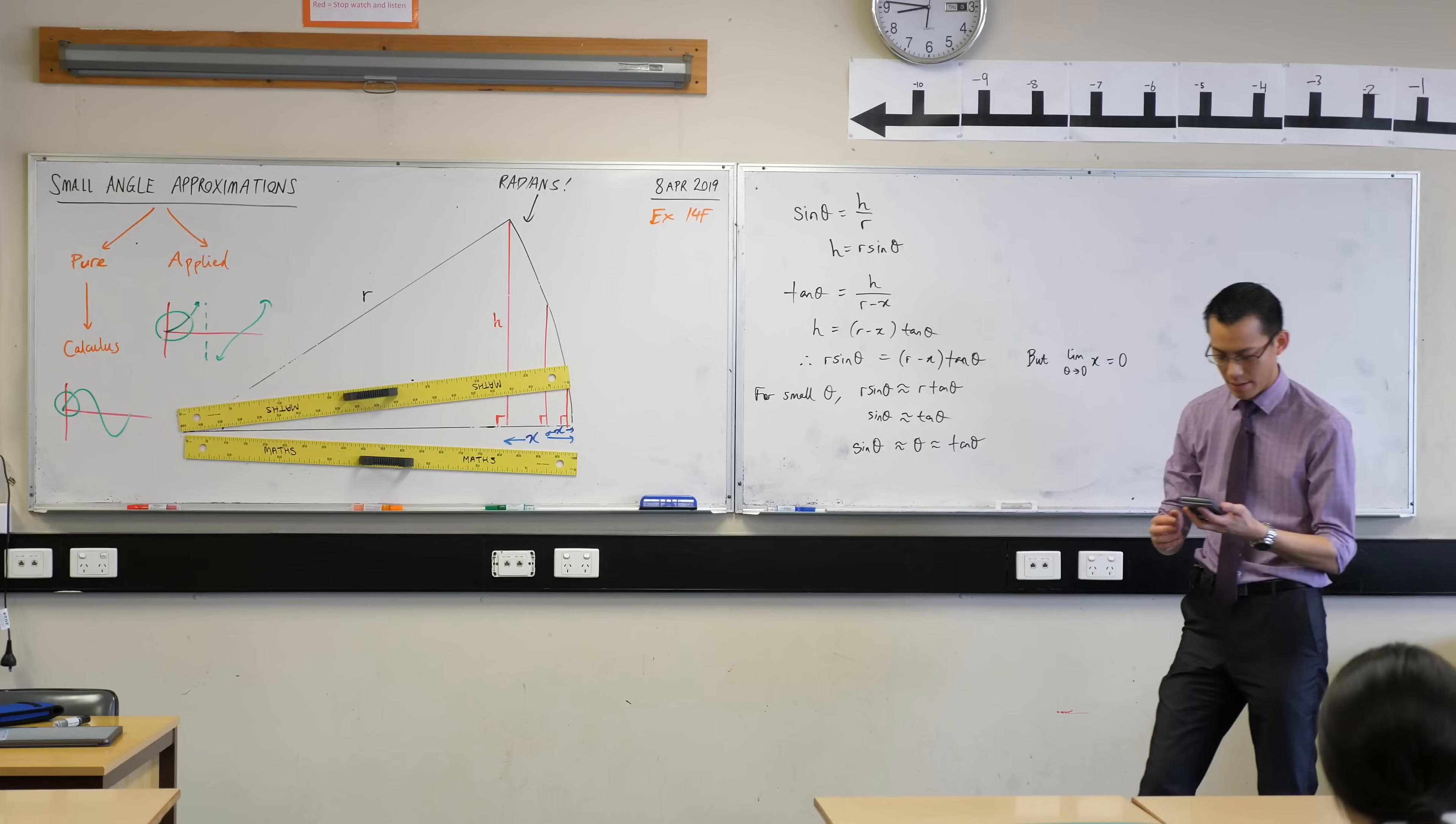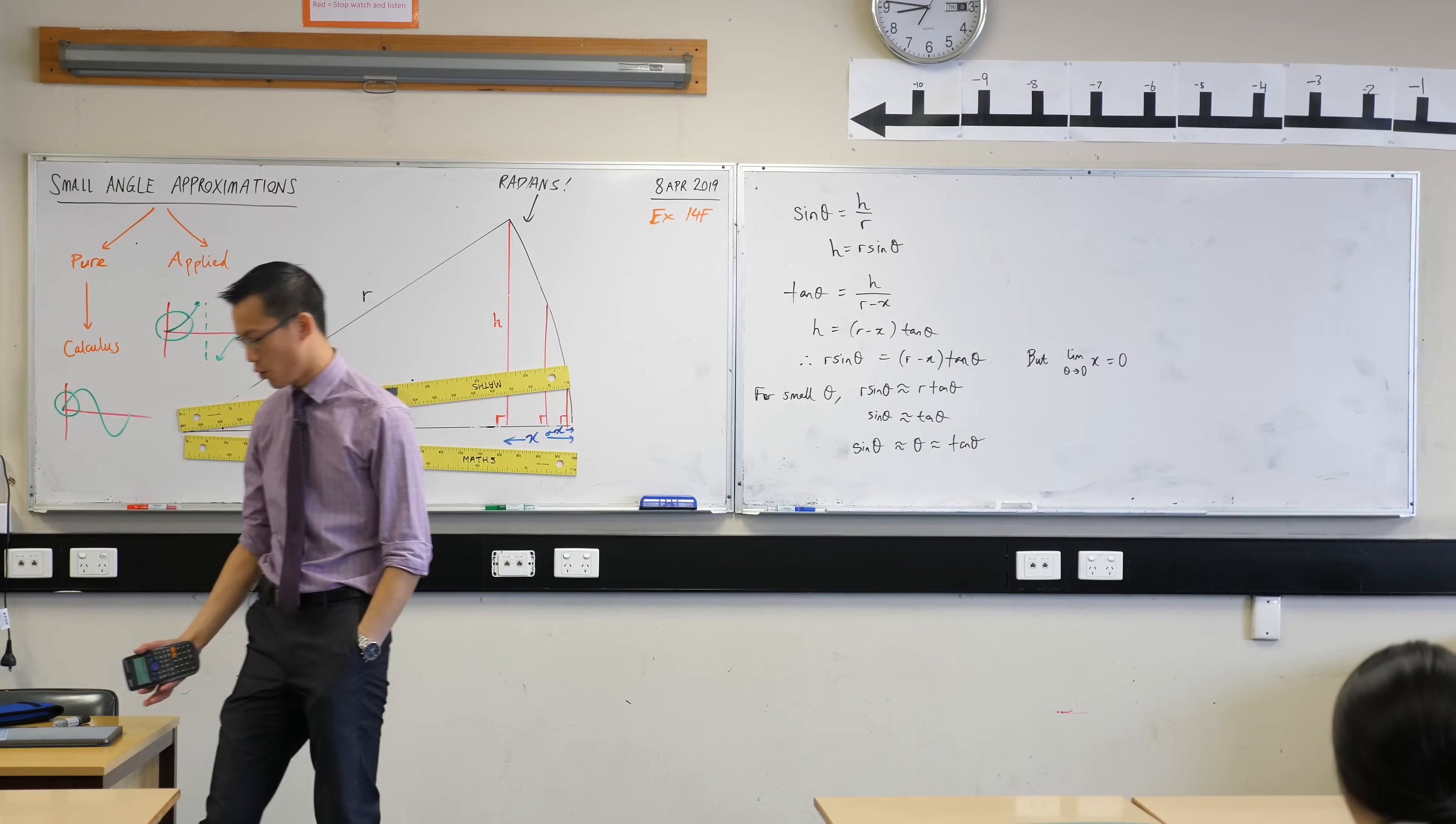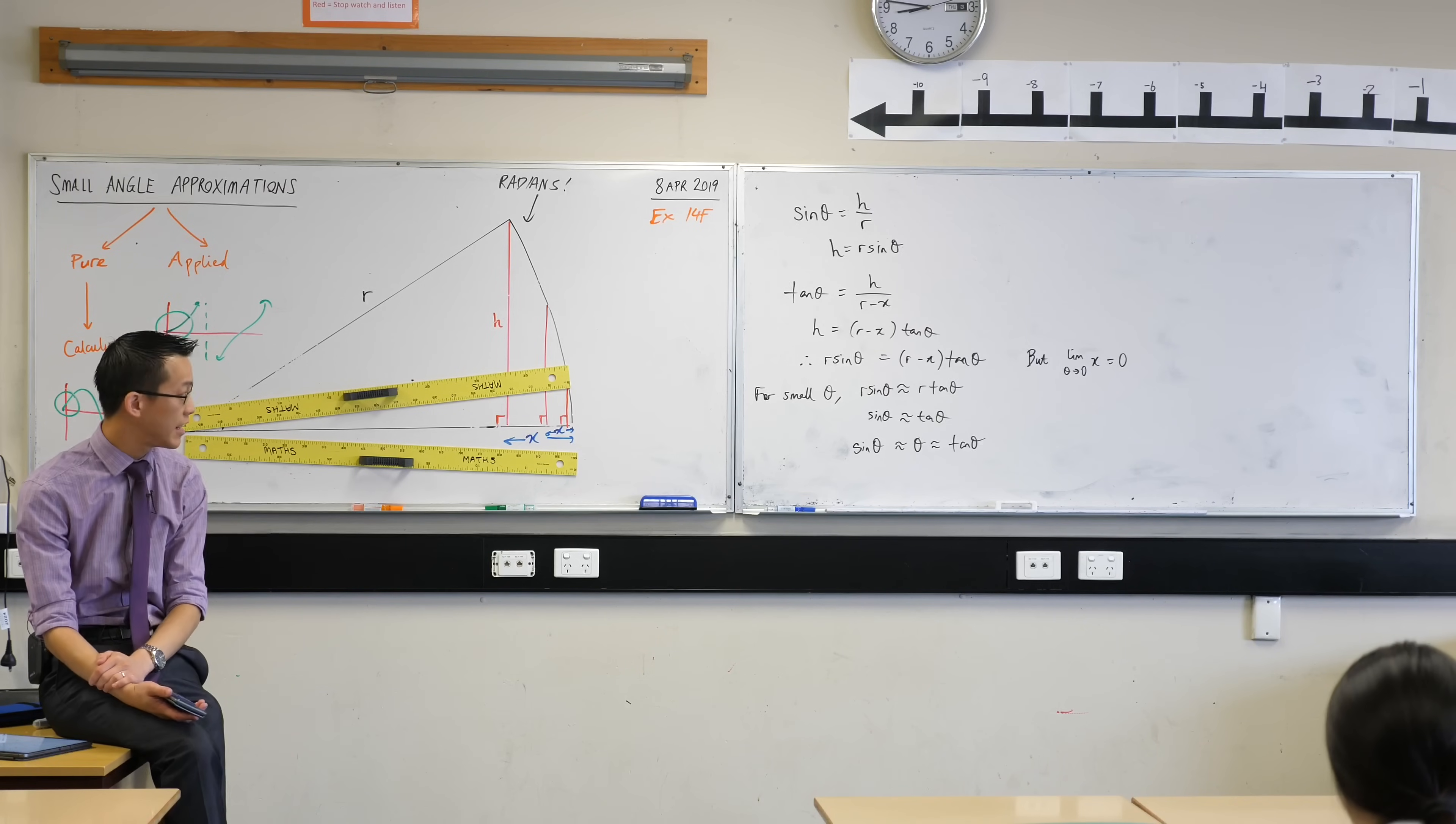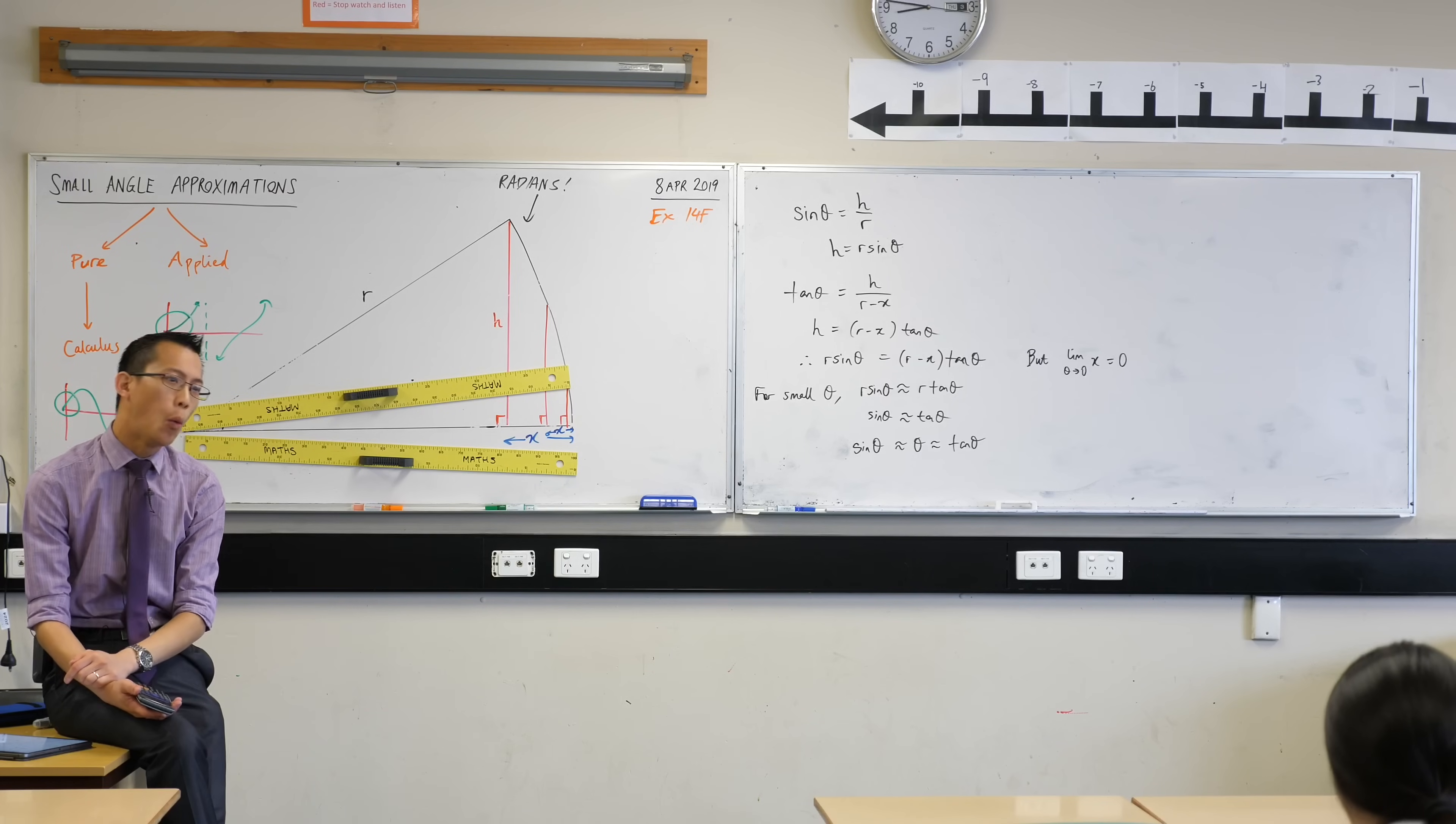So if you pop something into your calculator, choose a small angle. We're in radians, but if we want to make this really small, try sine of 0.01, something like that. That's a small angle. Or if you like, put in tan of 0.01. What are you getting out?